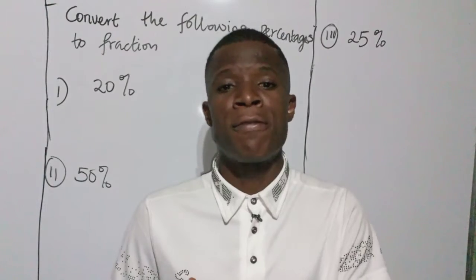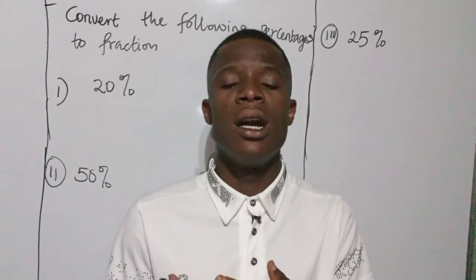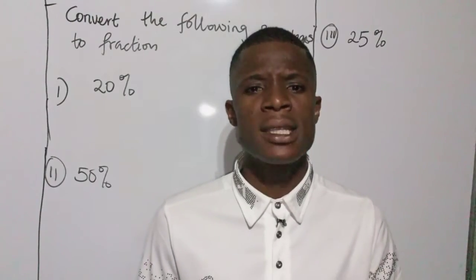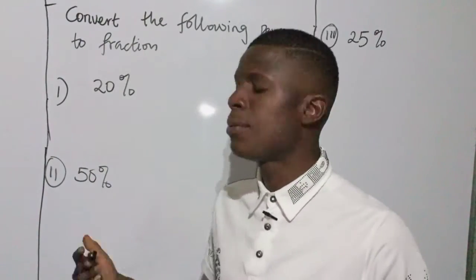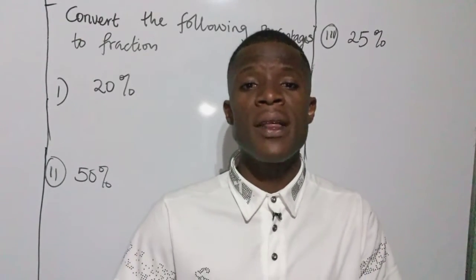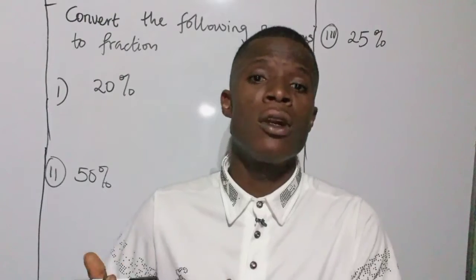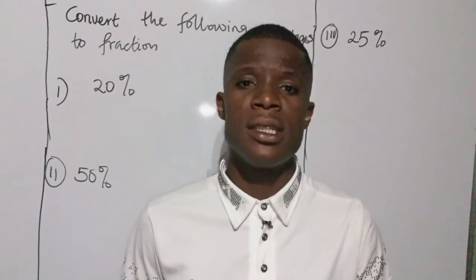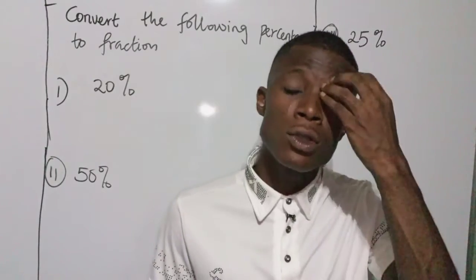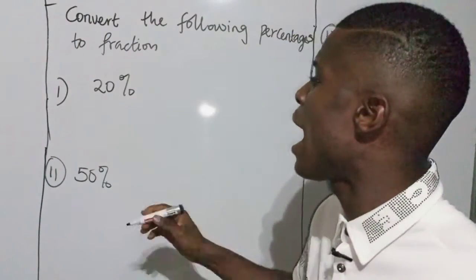For example, when I have 20%, or 50%, all these numbers, whenever these numbers are expressed in a ratio or fraction of 100, that number is tagged percentages. So today we discuss how to convert these percentages to fractions. Whenever I have 20%, this 20% is equal to 20 over hundred, because a percentage is just a fraction, a fraction which has a denominator of hundred.